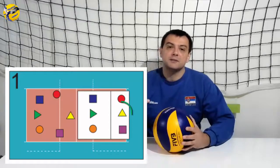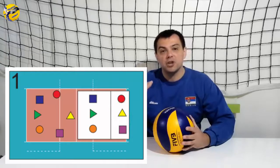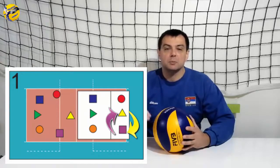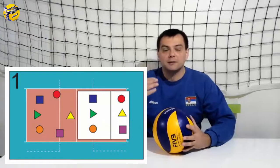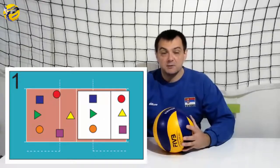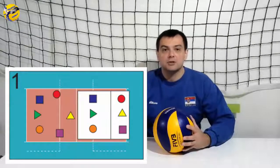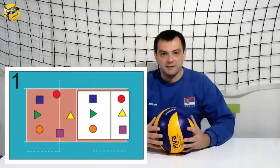As you can see in the picture, on rotation one, setter is on position number three and he or she is changing the place with the player on position number two where the middle hitter is. This happens when our team is serving so that our setter is on the right side to play the defense.